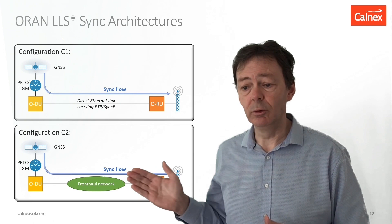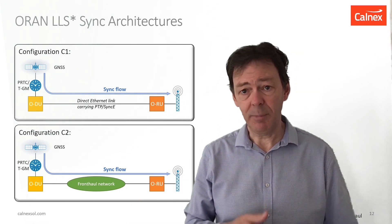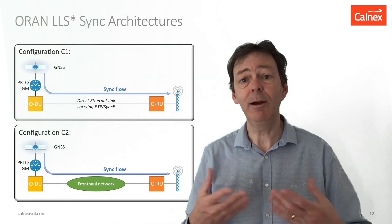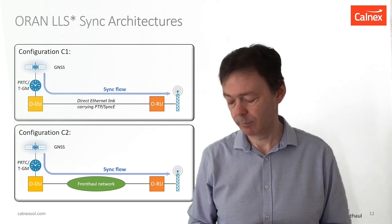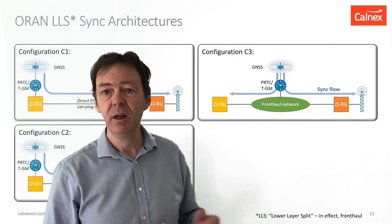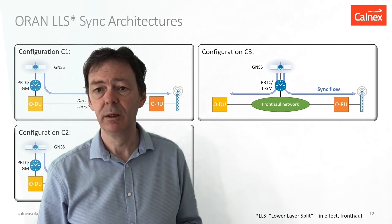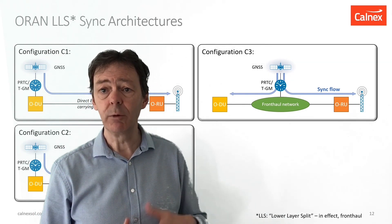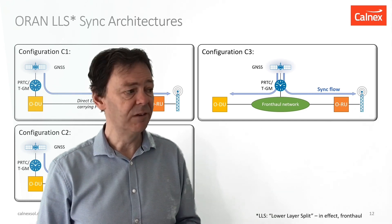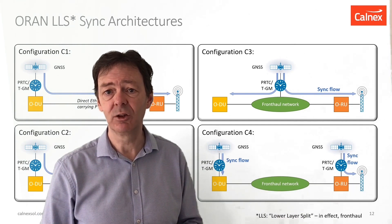Configuration C2 is very similar. Again, the DU has a synchronisation reference and it passes that timing to the RU, only now instead of a direct Ethernet connection, we have a network in between — the fronthaul network. Then we have configuration C3, where the synchronisation reference is now connected directly into the fronthaul network, so the RU receives its timing from the synchronisation reference and not via the DU. And finally, configuration C4 is where everything has its own synchronisation reference.